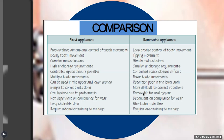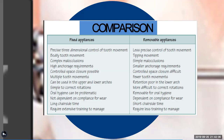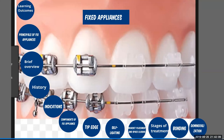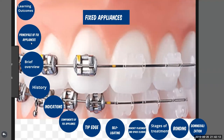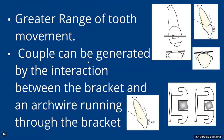Fixed appliances require longer chair-side time compared to removable appliances. Extensive training is required to manage fixed appliances, whereas removable appliances do not require such extensive training. Fixed appliances work by providing a greater range of tooth movement — intrusion, bodily movement, uprighting — and control the movement of the root. We can change the type of tooth movement by controlling the center of rotation.